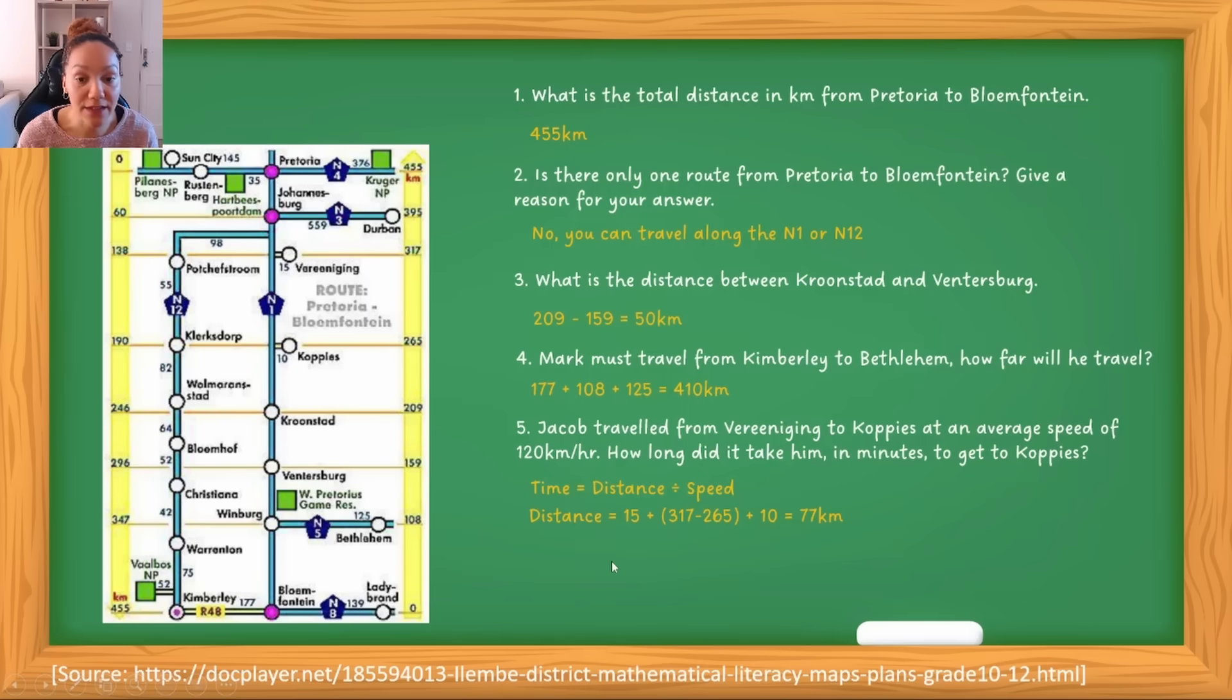The speed is given, so the speed is 120 kilometers per hour. If I want to calculate time, I take the distance divided by the speed. I've got a distance of 77 kilometers, which we calculated from the map, divided by 120 kilometers per hour, which they gave us in the question. What's important to note is that the time unit will always be the time unit in the speed calculation. This is 120 kilometers per hour, so when you're doing this calculation, your answer is going to be in hours. So this is 0.64 hours.